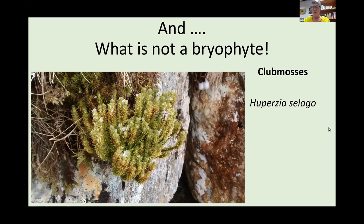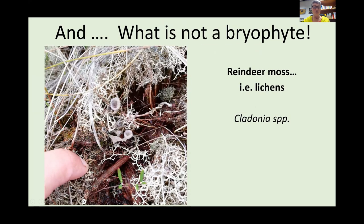This is a picture of one of the more common club mosses, taken at Colidua. Another thing which isn't a bryophyte is what people sometimes call reindeer moss. Reindeer moss is actually a lichen, and lichens have very little to do with bryophytes — they are a mutualistic association between a fungus and an alga or a cyanobacterium, so they are very different from bryophytes.